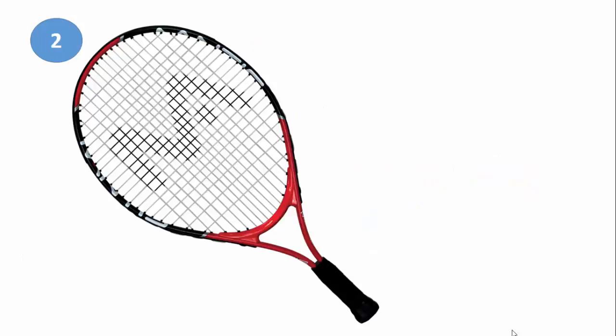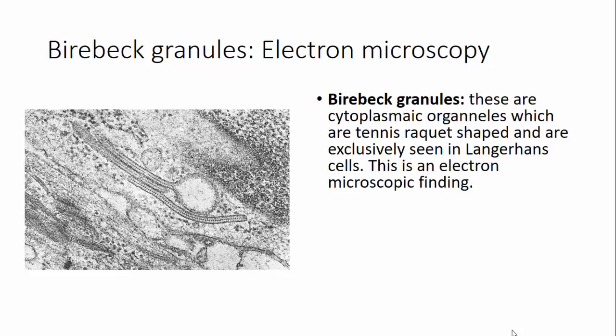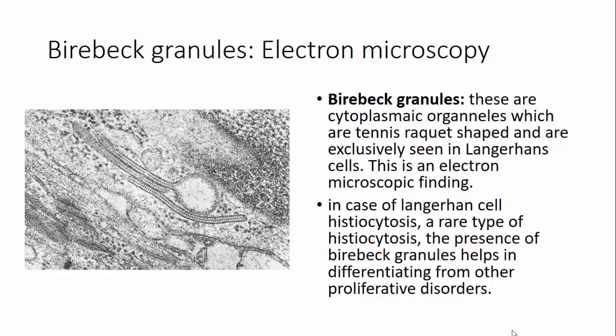The second one is a tennis racket. This electron microscopic image shows Birbeck granules, which are cytoplasmic organelles that are tennis racket-shaped and are exclusively seen in Langerhans cells. This is a rare type of histiocytosis, and the presence of these granules helps in differentiating it from other histiocytic proliferative disorders.